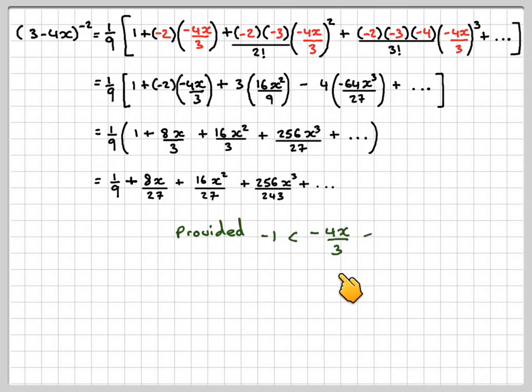Provided that -4x/3 is between -1 and 1, which means that x would have to be between -3/4 and 3/4.